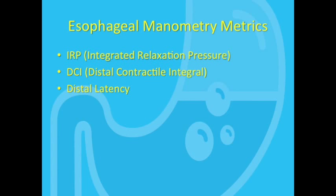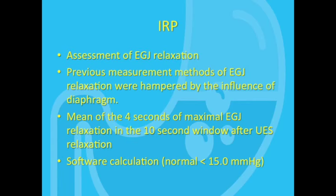Let's begin with the IRP. The IRP is an assessment of EGJ relaxation with solicited wet swallows. It is a rather complex mathematical calculation that finds the lowest average pressure of 4 seconds duration immediately after a swallow.